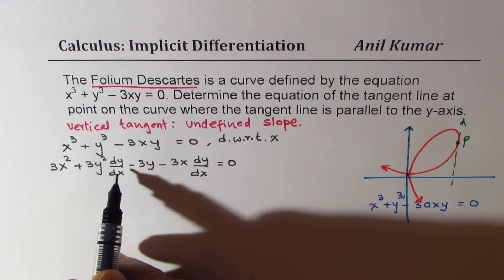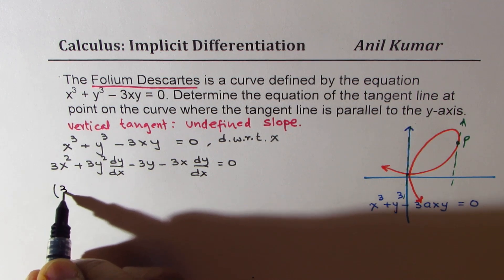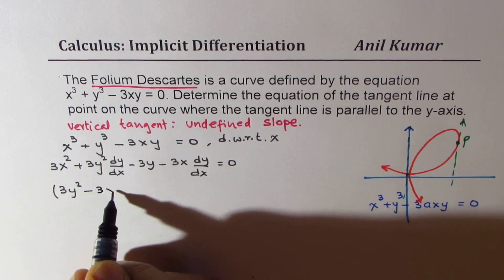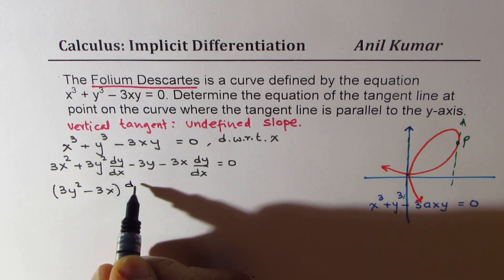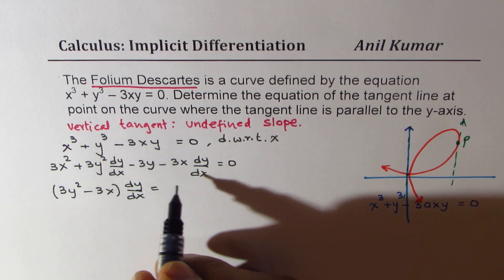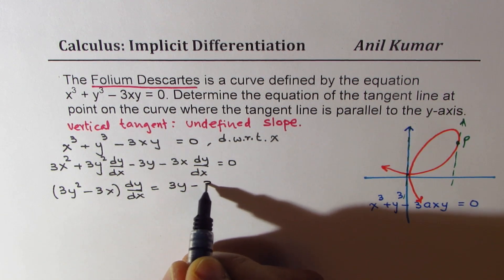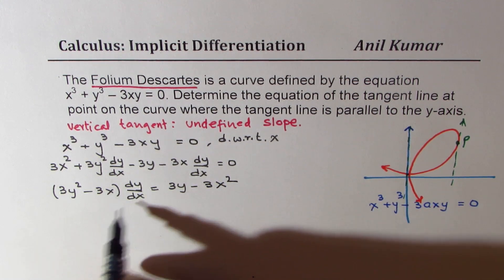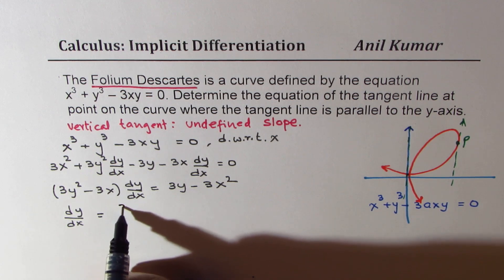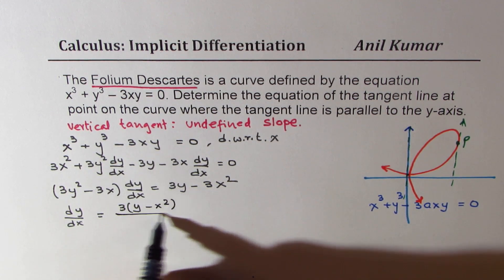Now bring down common factors. Group them. So we get 3y squared minus 3x dy/dx. Let me take the other terms on the right side. So we get 3y minus 3x squared.